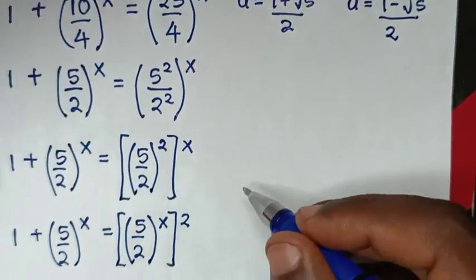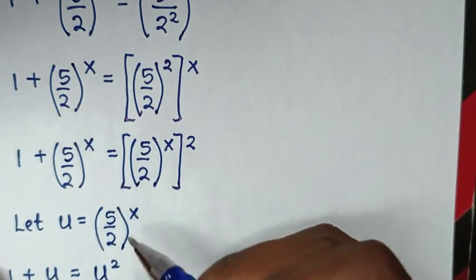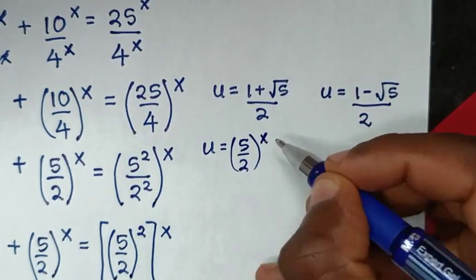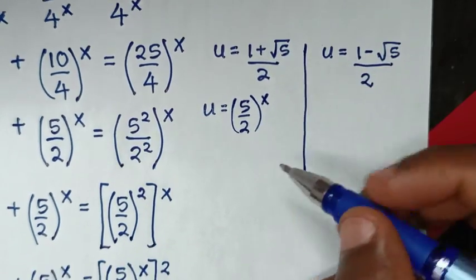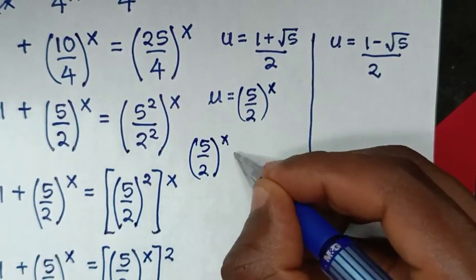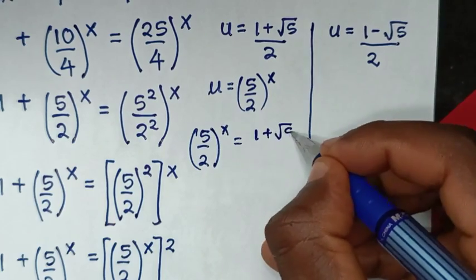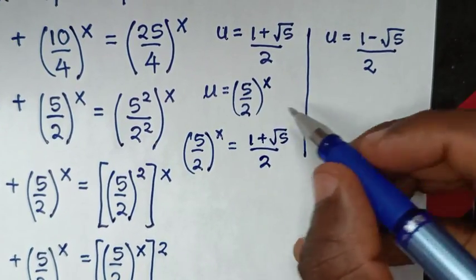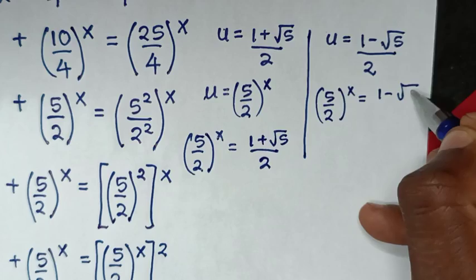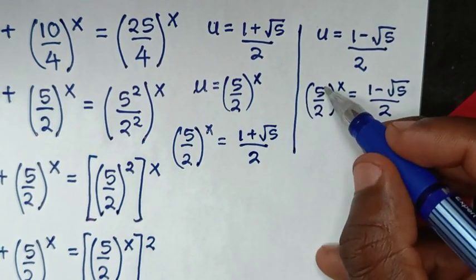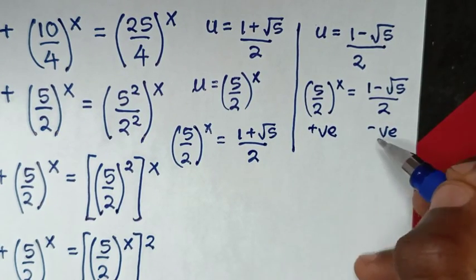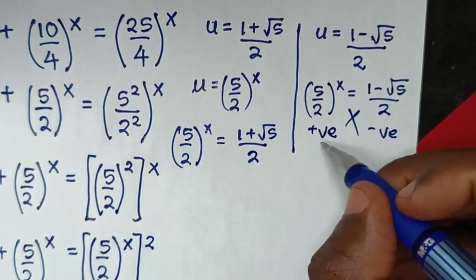But recall we let u equal (5/2)^x. Since (5/2) to any power is always a positive value, and the second solution (1 − √5)/2 is negative, a positive value cannot equal a negative value. So we reject that solution.